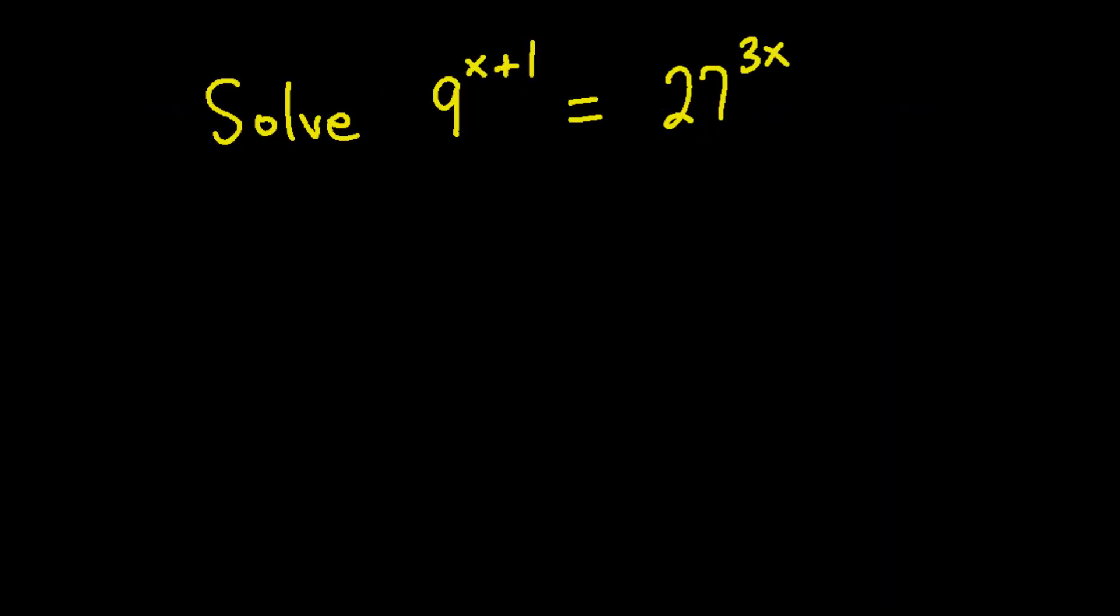This next problem is an exponential equation. We should notice that the bases of the exponents, the 9 and 27, can both be changed to base 3. First I'll write 9 as 3 squared and that 2 will get multiplied in the exponent by x plus 1. Then I'll write 27 as 3 cubed and that will get multiplied in the exponent by the 3x.